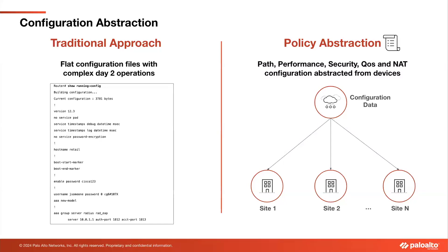Configuration abstraction is important because the template is not a traditional flat file containing every single configuration widget. You don't have to change template files every time you want to make configuration changes — that's where policy abstraction becomes critical. Common day-two changes like changing how Microsoft traffic is forwarded, handling an application differently from a performance perspective, or changing a QoS policy are handled by the controller's policy stacks. The template itself is focused on unique device configuration: IP addressing, LANs, and ports needed for that branch.